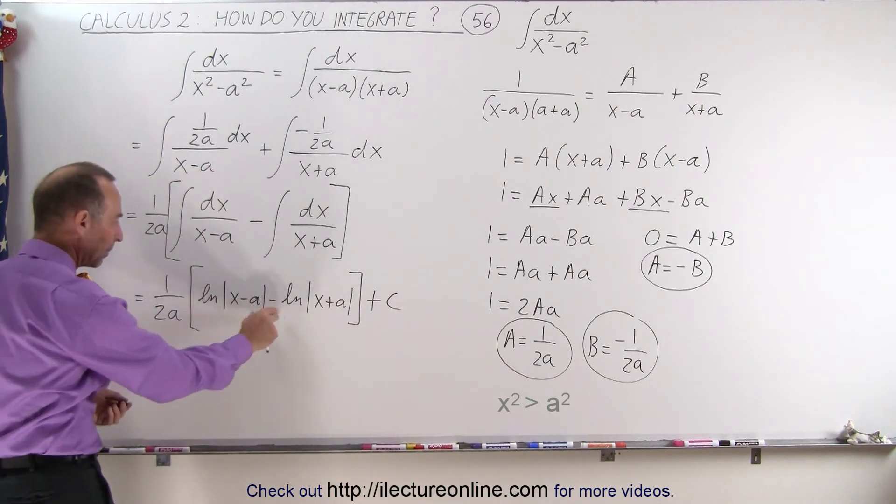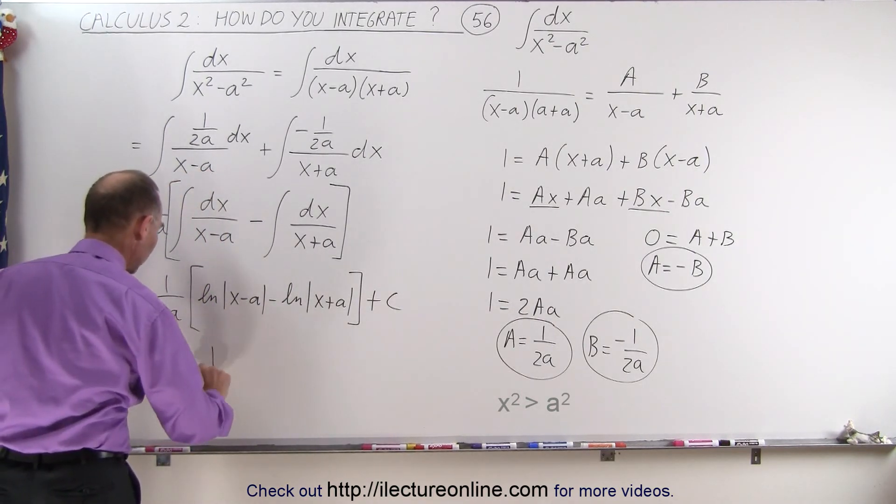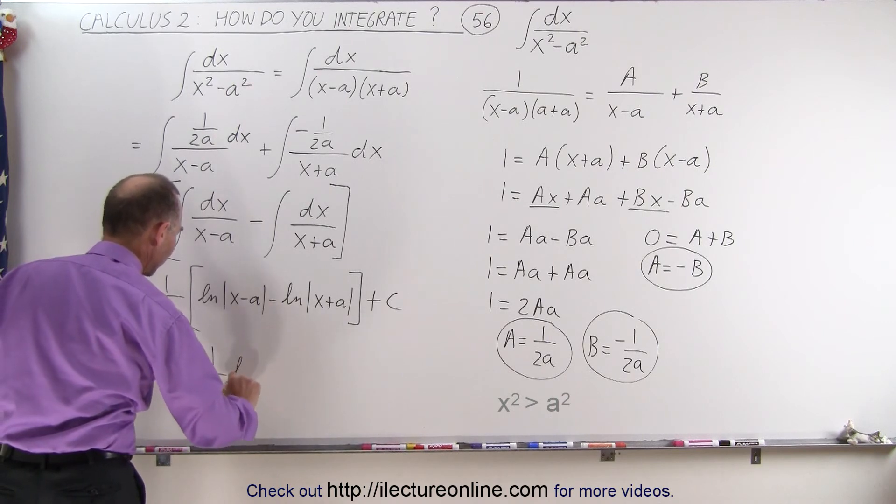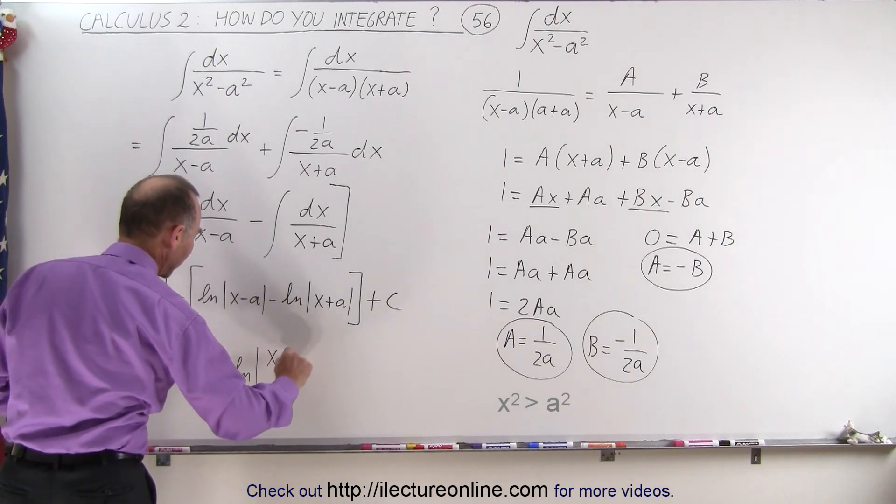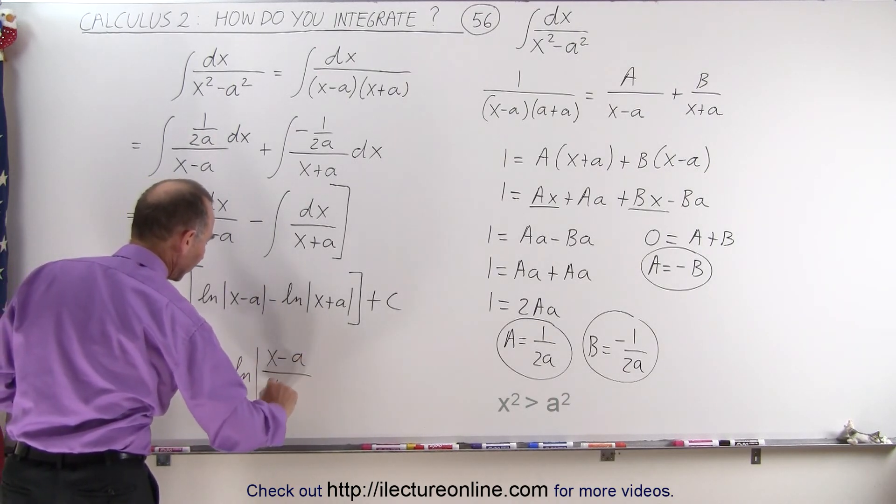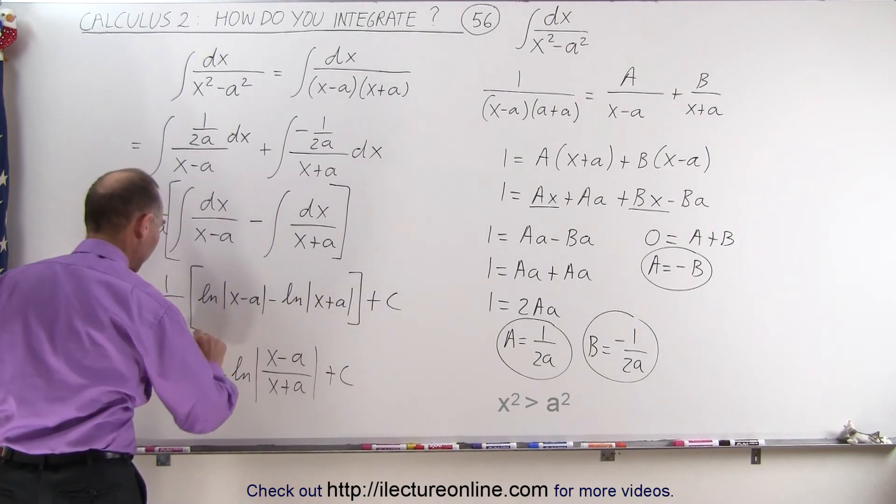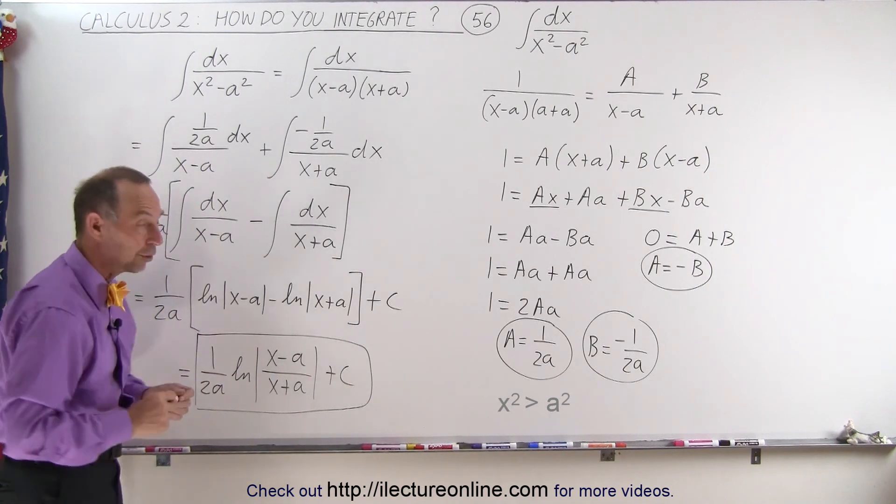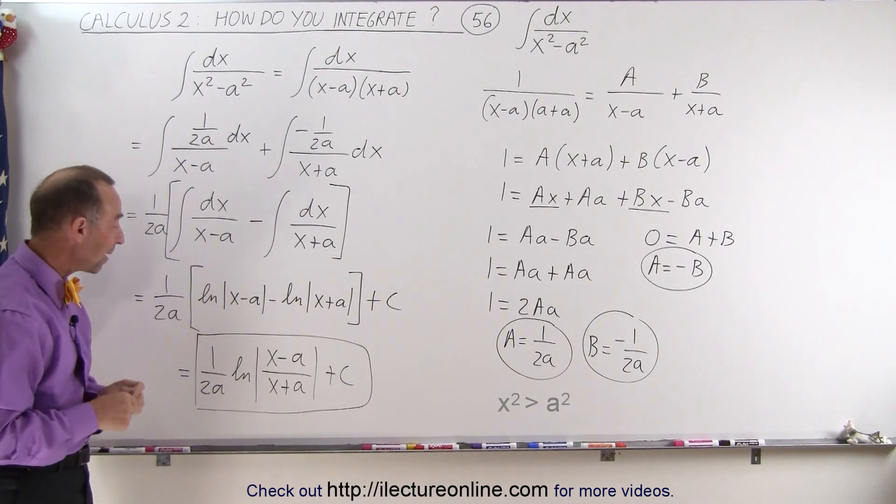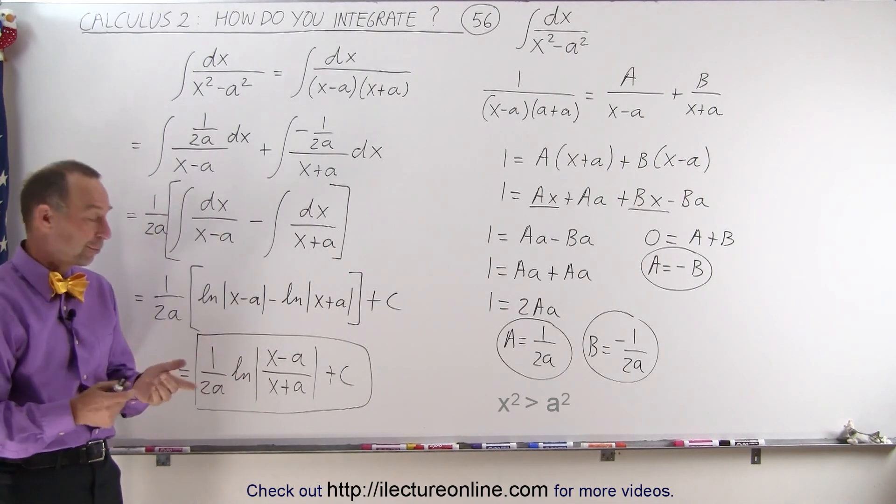And finally, of course, we can combine these two and write this as 1 over 2a times the natural log of x minus a over x plus a plus a constant of integration. You can see that the method is fairly similar to the one we had in the previous example.